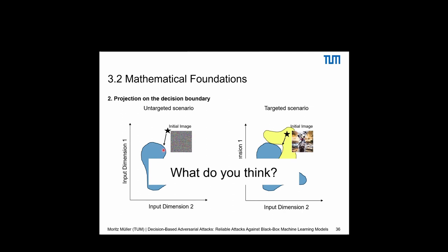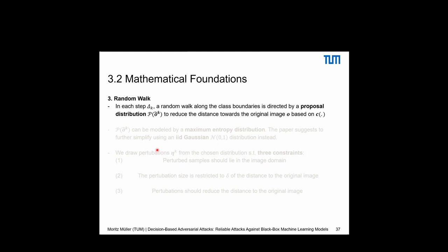The third step is the random walk, guided by a proposal distribution P that tells the walk where to go, with the goal of reducing image distance to the original. The paper suggests using a simple i.i.d. Gaussian — a standard normal distribution with mean zero and variance one — since it's easy to implement, rather than a maximum entropy distribution.